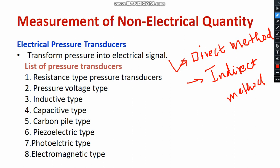However, let us discuss the first segment, that means methods 1 to 8 — the different methods of measurement of pressure by direct method. Let us understand the electrical pressure transducer. What do we mean by electrical pressure transducer? It transforms pressure into an electrical signal. It may be voltage, current, or resistance. So pressure is a non-electrical quantity that is going to be converted into an electrical signal.